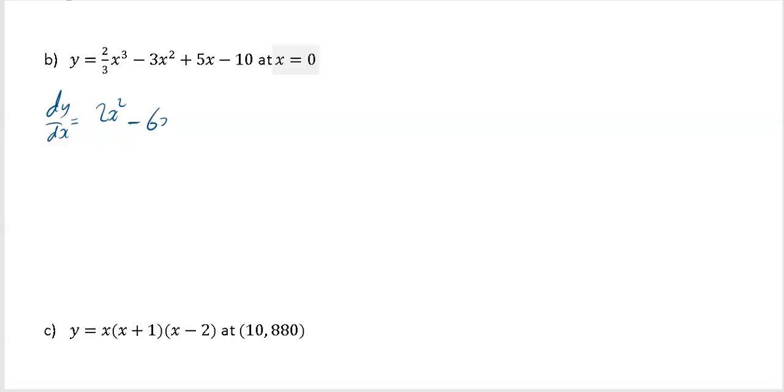Next one, a lot easier. It's just going to be 6x, then plus 5, and then minus 10 differentiated gives you 0. So a wee word again in mathematics makes all the difference.